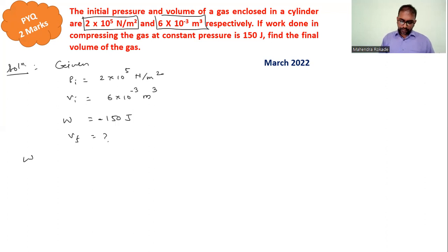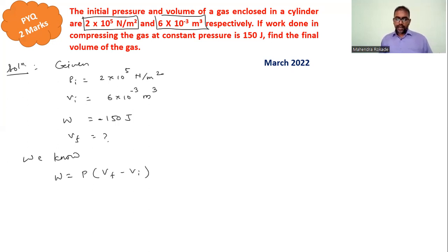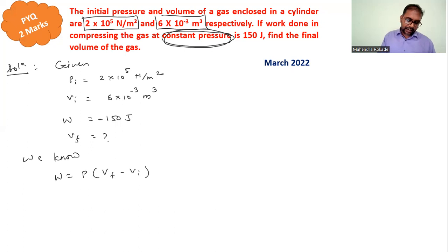Now we know a formula for work done: W = P(Vf − Vi). Here you remember pressure is constant, so the initial pressure equals the final pressure, which equals 2×10⁵ Newton per meter square.